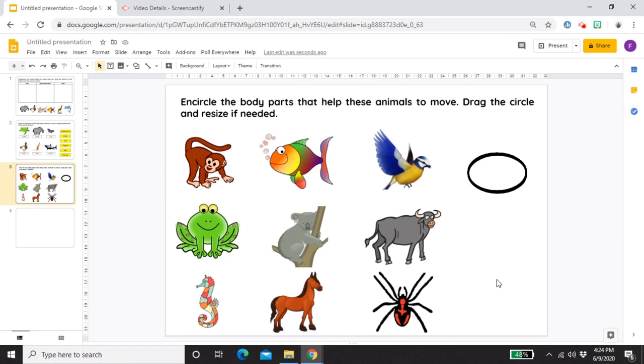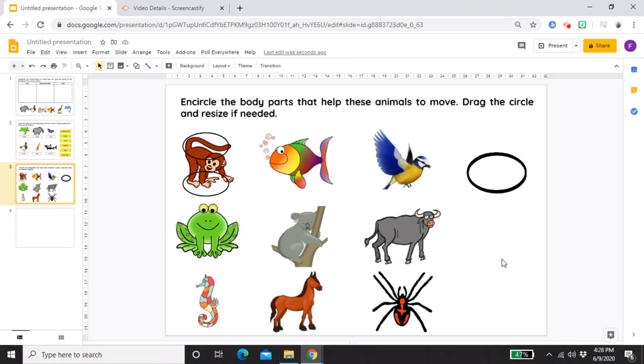The students won't see that there are many circles. When one circle is removed, another one will replace it. Just like this one. For example, this. Resize it and use it again. Resize. And yes, we're done with the third type of activity we can create in Google Slides.